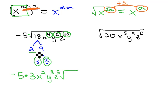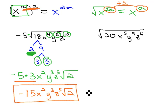The only thing left inside the radical that has not come out is the 2. Finish up by multiplying negative 5 times 3 to get negative 15, x squared, y cubed, z to the 5th, times the square root of 2 for our final answer.